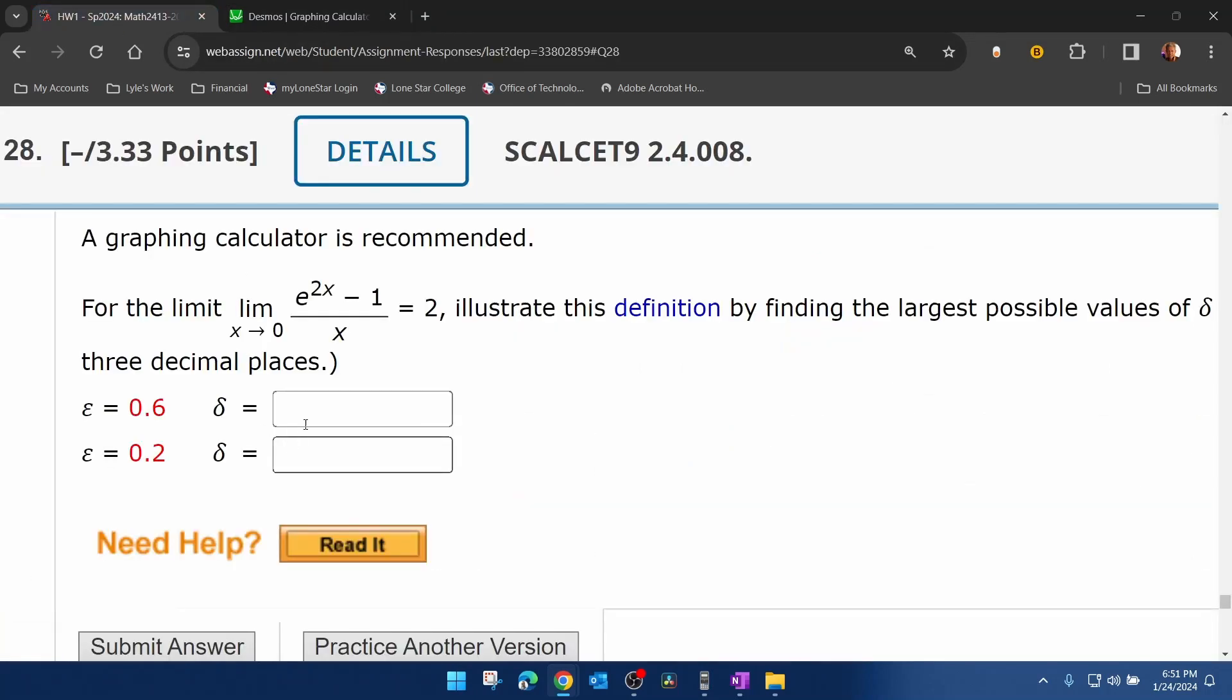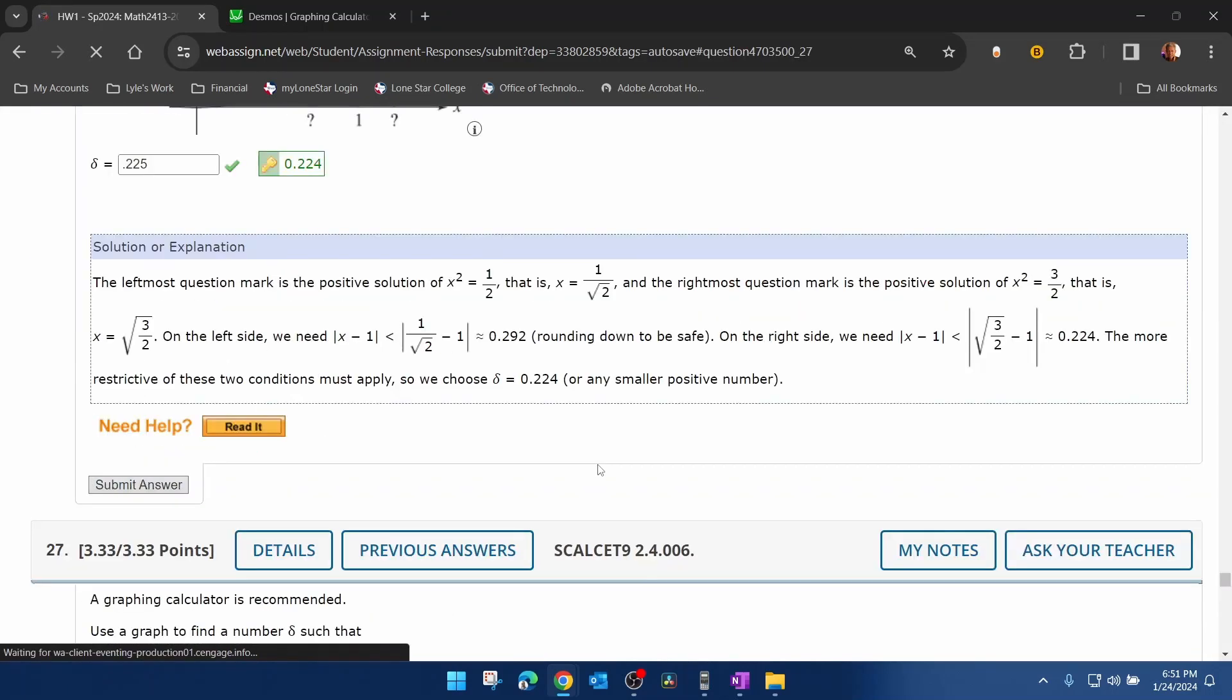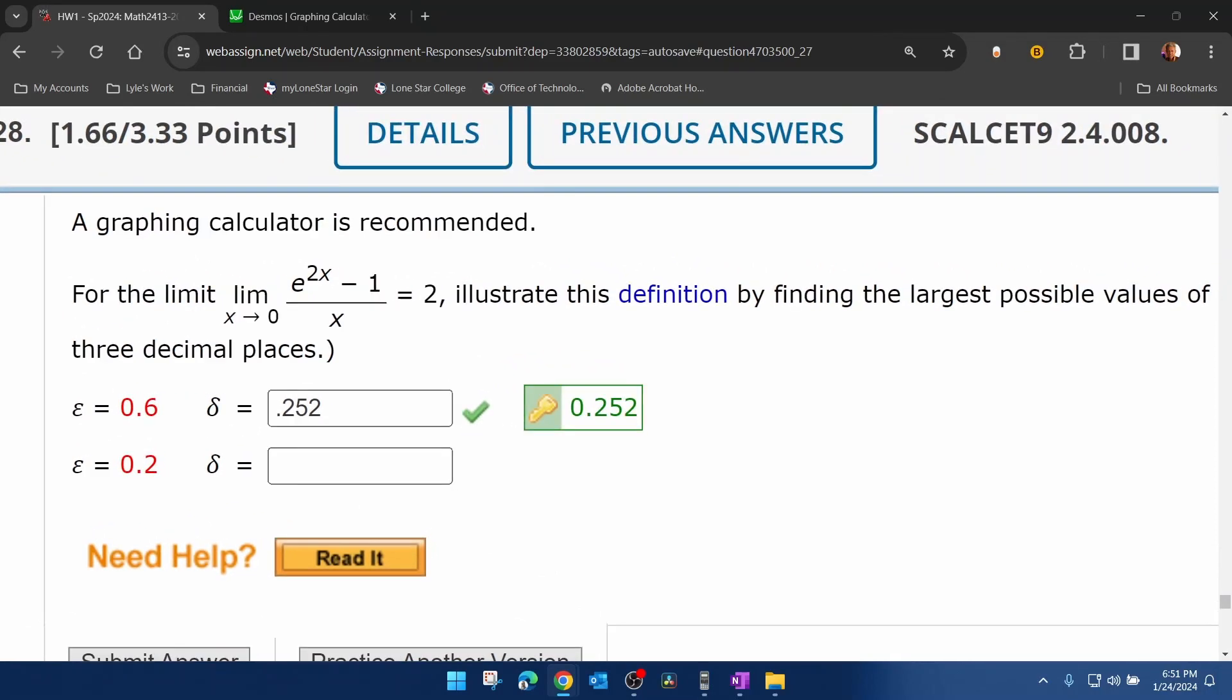So let's go back to WebAssign. We're going to put on our 0.252. I don't have to actually do both answers at one time. I'm going to submit and see if that answer is correct before I move on and illustrate the other part of the problem. And we can see there that what I did is correct.